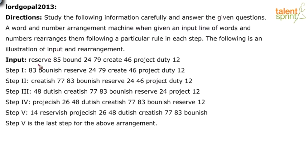The input is: reserve 85, bound 2479, create 46, project, duty 12. There's a step-by-step process and step 5 is the last step for the above arrangement. What is step 5? 14 reservish, project-ish 26, 48 duty, create-ish 77, 83 boundish.